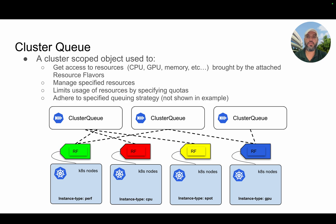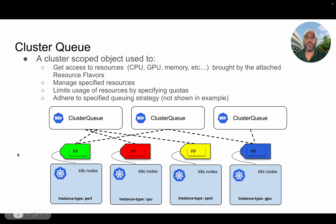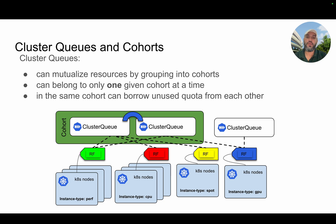The next important concept is the cluster queue. The cluster queue is a cluster-scoped object, and usually it is defined by the cluster admin persona. The cluster queue has access to resources, and these resources are provided by attaching resource flavors. You can attach several resource flavors within resource groups that live inside the cluster queue. The cluster queue also defines the quota of every resource — there is a specific field called the nominal quota, which gives the minimum guaranteed amount of a specified resource that can be used by this cluster queue.